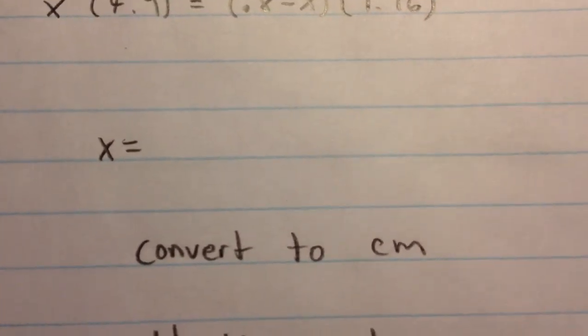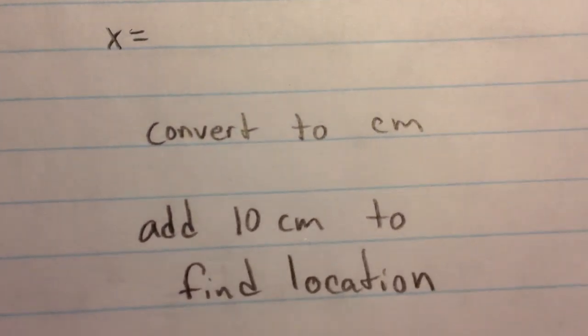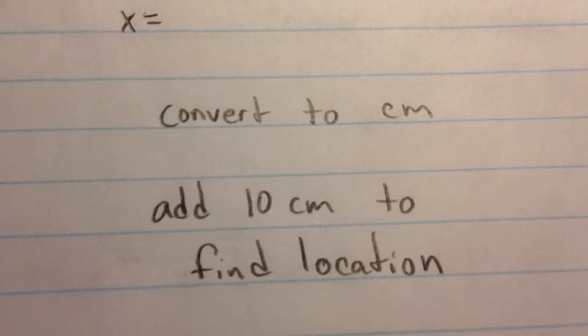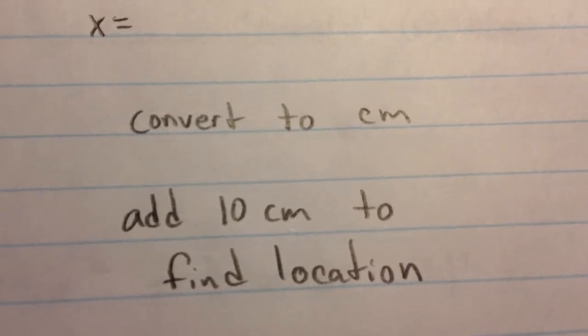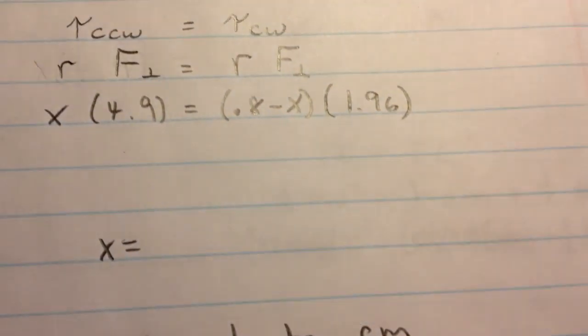Once you have the X, you convert it to centimeters, add it to the 10 centimeter location for the 500, and that will tell you where on the meter stick to put your balancing point.